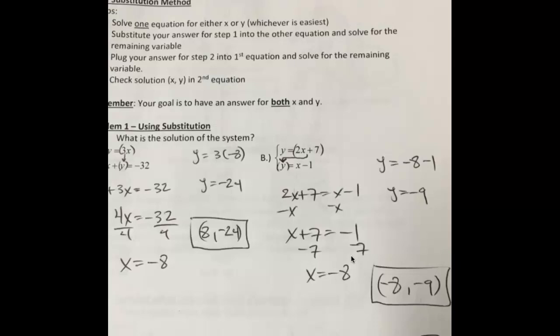Remember, this would technically be the point where the two lines cross, but we're not even graphing — we're just figuring out the point by using this method called substitution. The ordered pair is negative 8, negative 9. You might want to plug that into the top equation just to verify: plug in negative 9 for y, negative 8 for x. 2 times negative 8 is negative 16, negative 16 plus 7 is negative 9, which matches y, so I know I got the answer right.